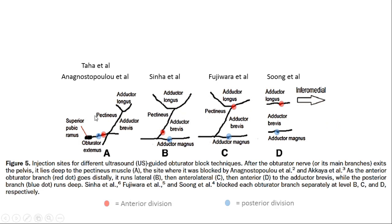The posterior branch lies proximally between the pectineus and obturator externus muscles, and then lies between adductor brevis and magnus throughout its course. Understanding this anatomy is very important to block a particular division or the nerve itself.